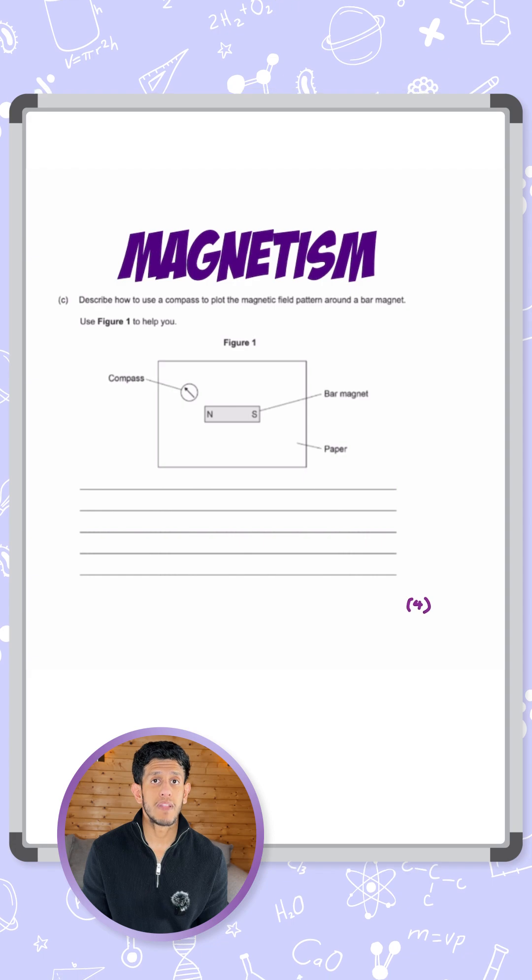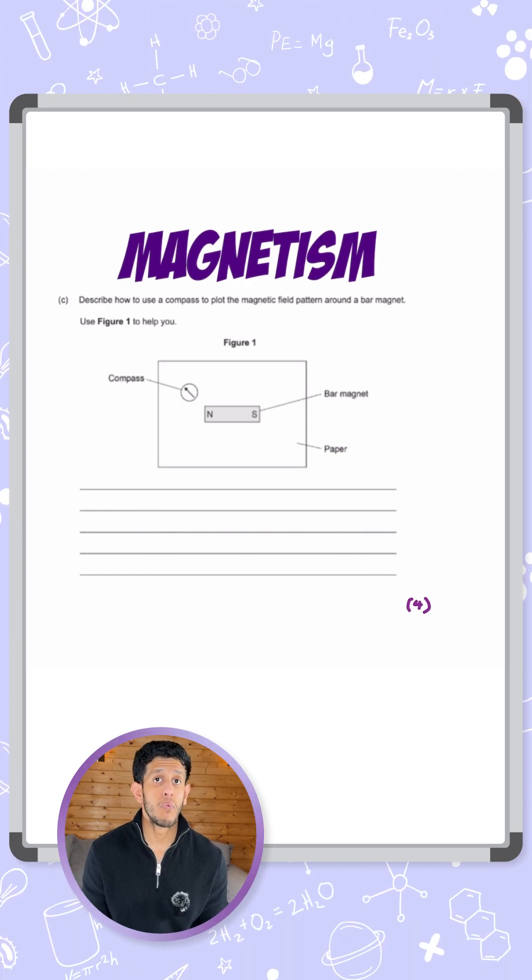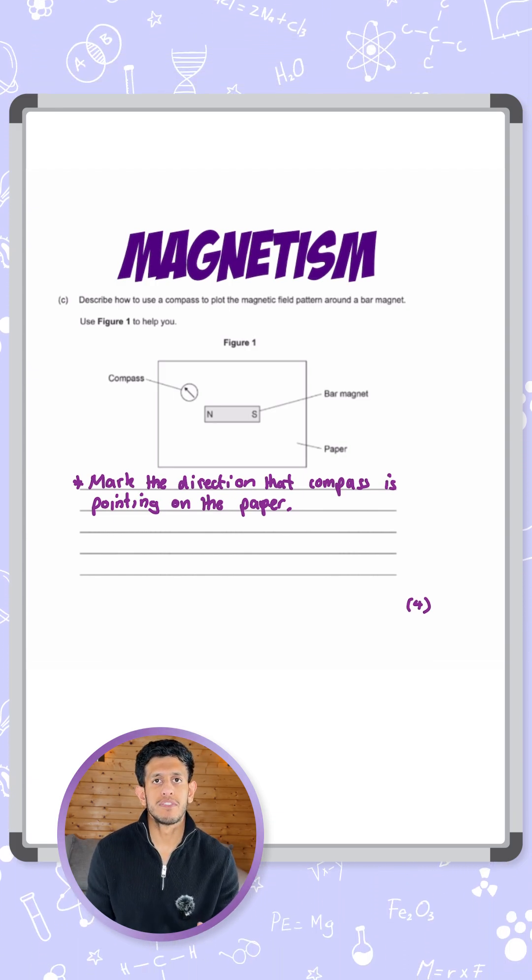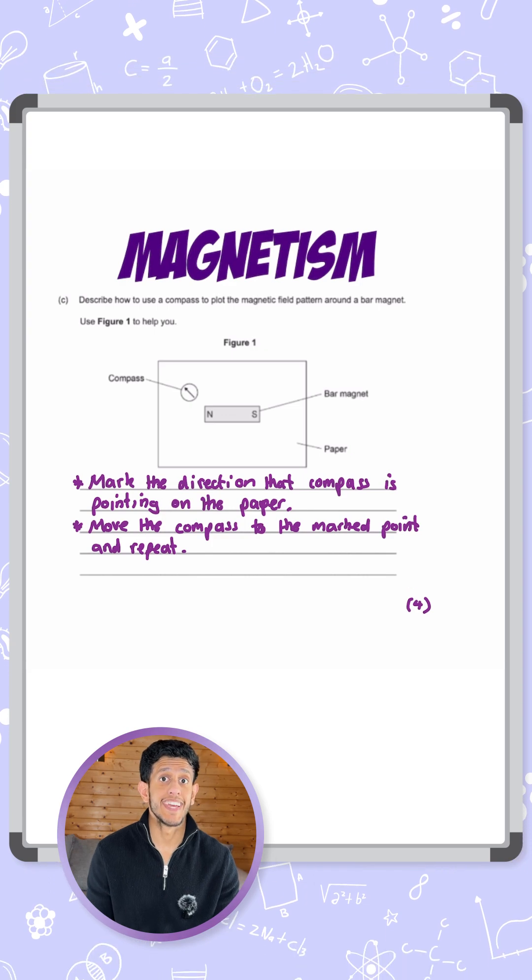The first step once you've placed the compass is to draw on the piece of paper where the compass is pointing towards. The next step is to move your compass to that new point and then repeat the process. Move the compass to the new point and mark the direction the compass is pointing in again.